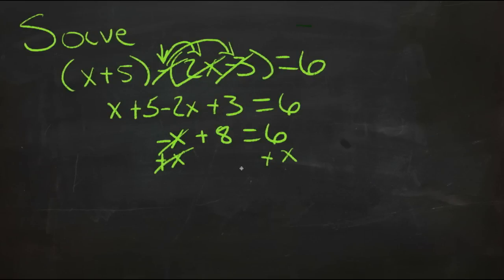And then we'll subtract the 6 from this side and move it to the other side. So we'll end up with 8 minus 6, that's 2, and plus x on this side.